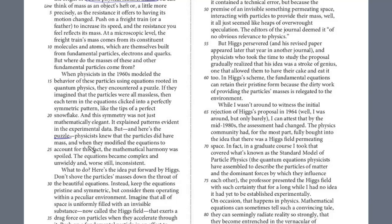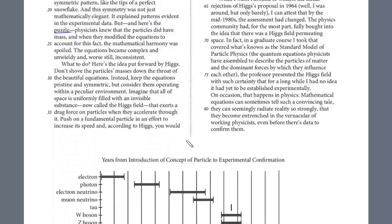Physicists knew that the particles did have mass, but when they modified the equations to account for this, the mathematical harmony was spoiled, the equations became complex and unwieldy, and were still inconsistent. And so then it talked about Higgs had this theory, but it wasn't accepted at all by the scientific community, but over time gradually it gained acceptance, and it was so strong it was actually accepted before it was scientifically proven, which is very unusual in science because it's always data-driven.